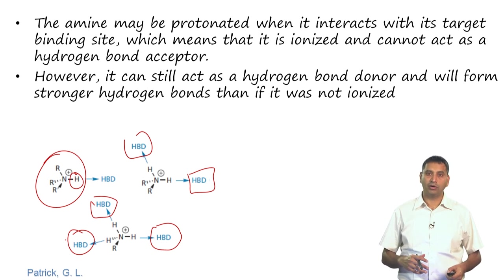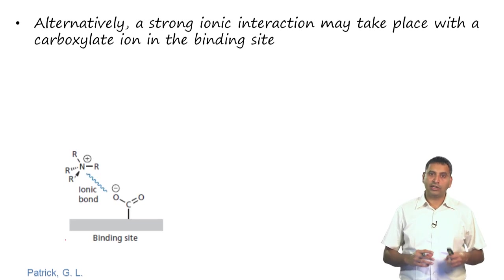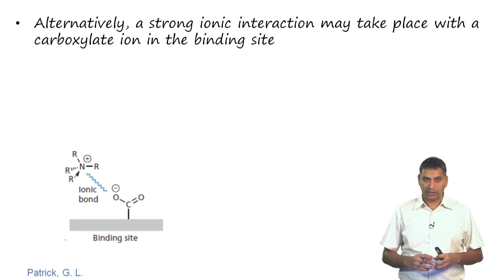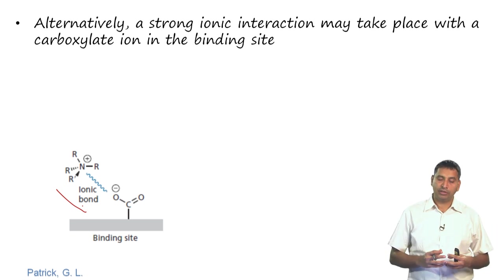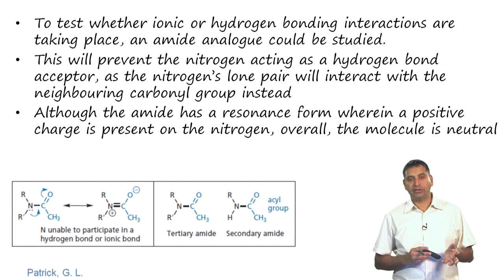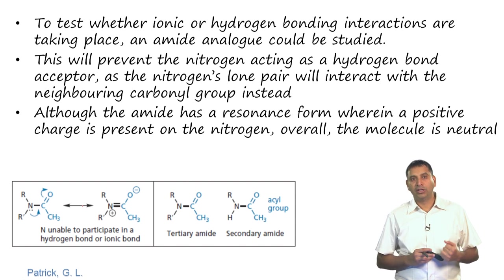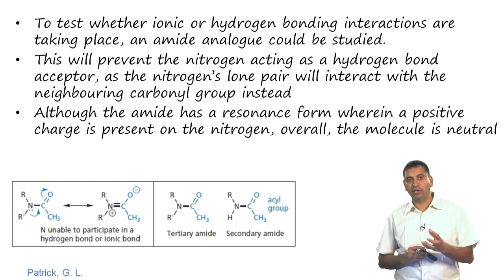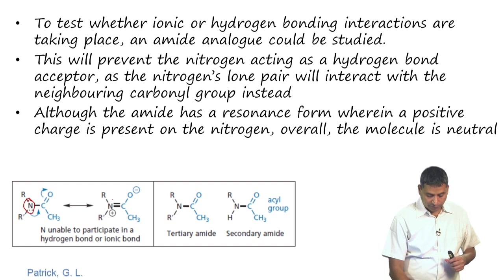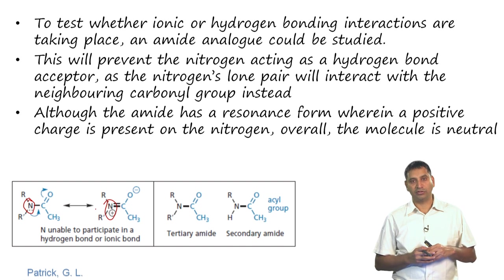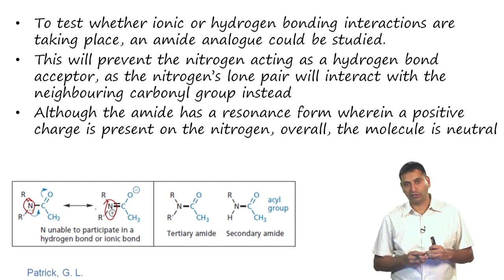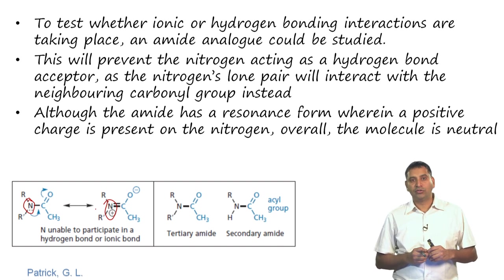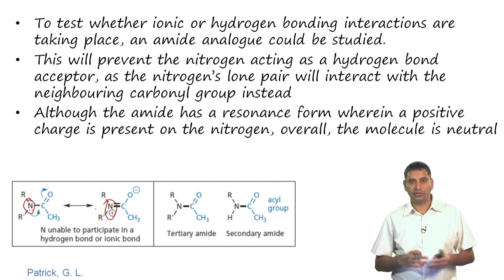The amine can have a hydrogen bond interaction if not ionized, or alternatively a strong ionic interaction with a carboxylate binding site. To test whether ionic or hydrogen bonding interactions are taking place, one could convert the amine to an amide. This prevents the nitrogen from acting as a hydrogen bond acceptor because the nitrogen lone pair delocalizes into the neighbouring carbonyl instead of interacting with the target. The nitrogen lone pair is therefore not available to participate in hydrogen bonding, and since this nitrogen will not get protonated, ionic bonding is also prevented.